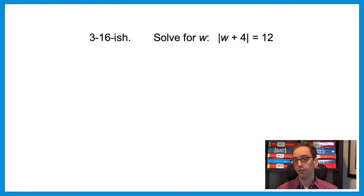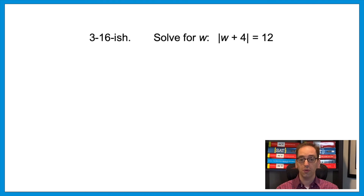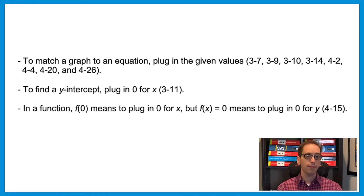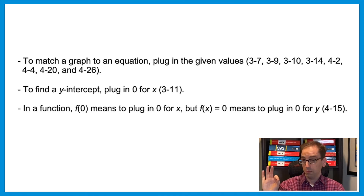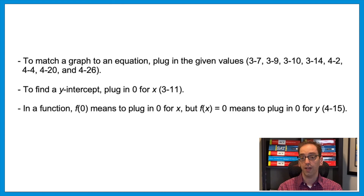A few more rapid-fire hints for topics on the April exam. Section 3 question 16: solve |w + 4| = 12. To solve a variable inside absolute value, make two equations — w + 4 = 12 and w + 4 = −12 — giving w = 8 and w = −16. Also: when matching a graph to an equation, plug in given x and y values to see how they match. To find a y-intercept, plug in zero for x. f(0) means plug in zero for x; f(x) = 0 means plug in zero for y.